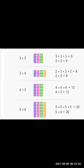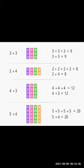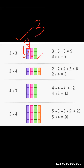Here you can see small blocks. In the first one, there are 3 blocks, and in each block there are 3 small boxes. So we multiply 3 into 3, and in this way we will solve this.